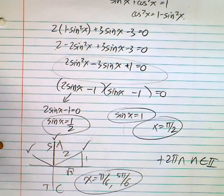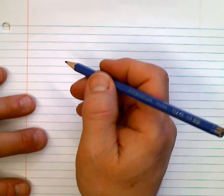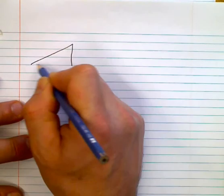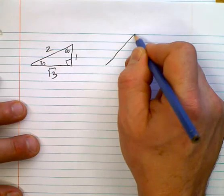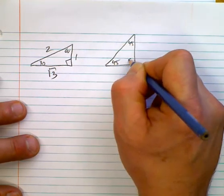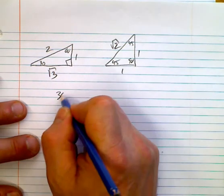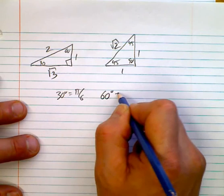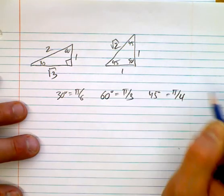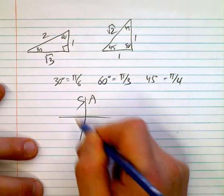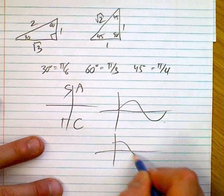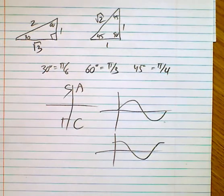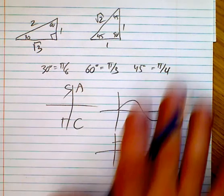To solve trig equations, you need to know your special angle triangles: the 30-60-90 with sides 1, 2, root 3, and the 45-45-90 with sides 1, 1, root 2. Remember 30° = π/6, 60° = π/3, 45° = π/4. Don't forget the All-Sine-Tan-Cos rule for signs in each quadrant, and remember the shapes of the basic sine and cosine functions. The sooner you get all this down, the better off you will be.